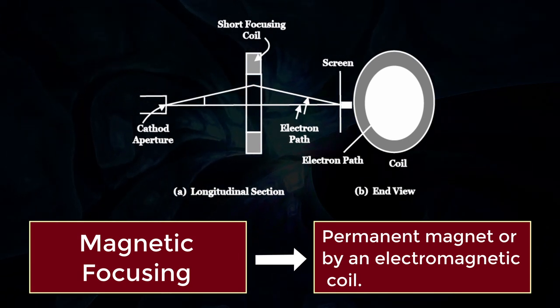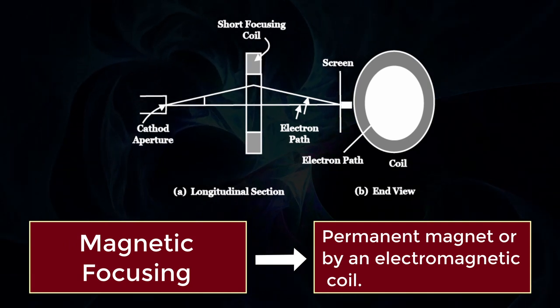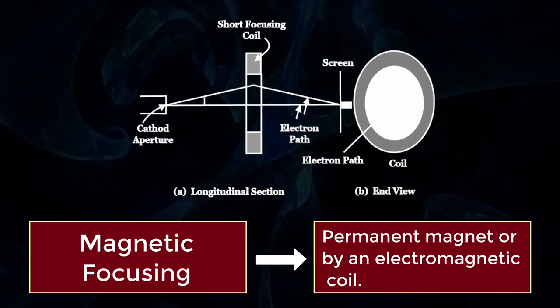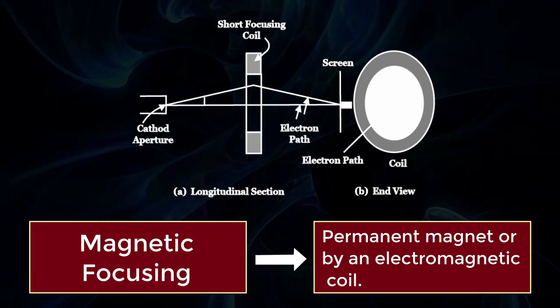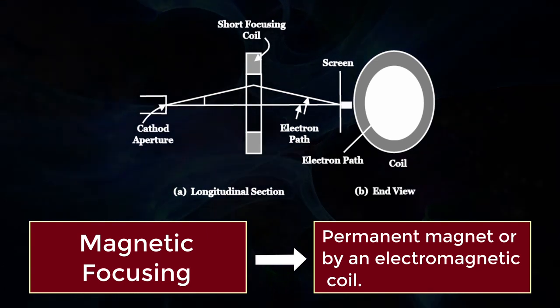The coil may extend the whole length of the electron beam or may be limited to a small region. Extended coil is employed in image orthicon camera tube of a TV and short coil type is employed in TV receivers, radar indicators and general purpose CRO.